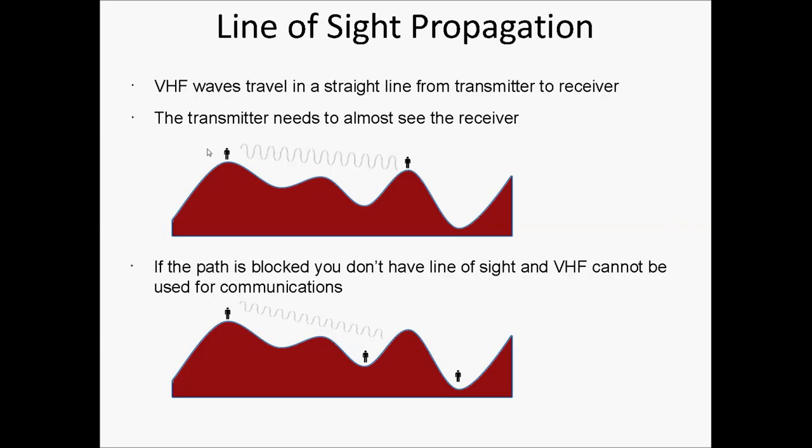When VHF waves travel, they cannot be blocked by a hill or building — they must travel in a straight line from transmitter to receiver. If the path is blocked, VHF waves cannot propagate. Many times, automatic repeaters are used to propagate signals around obstacles.